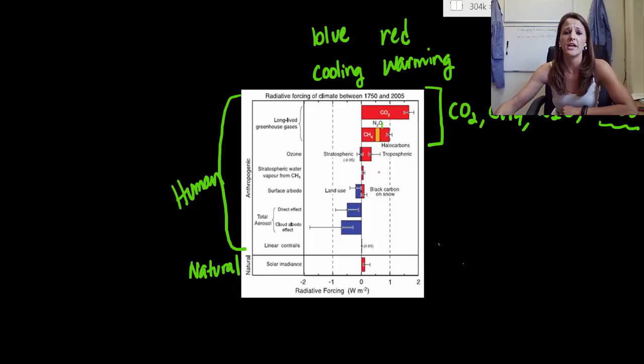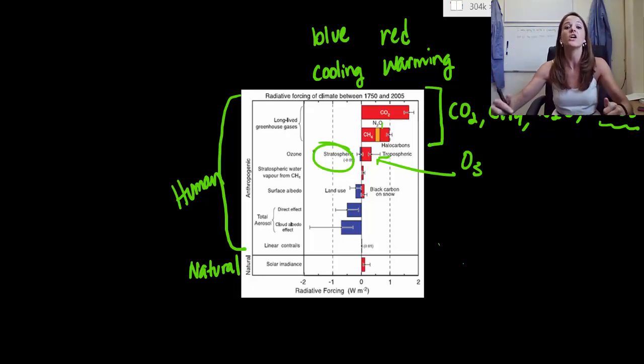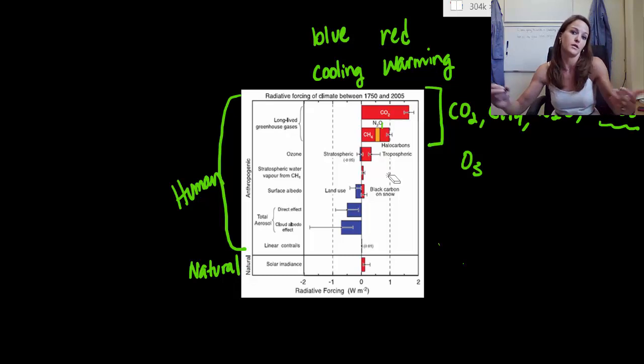Now, the next one we can look at is ozone. And ozone is really interesting because it has two different factors. So we know when ozone is in the troposphere, it definitely acts as a greenhouse gas because it absorbs IR radiation. But what's really neat is when it's in the stratosphere, it acts as a little bit of a protector for our planet. Because those ozone molecules absorb that incoming UV radiation, so it actually has an overall cooling effect. So ozone has both negative and positive forcings, which is kind of interesting.